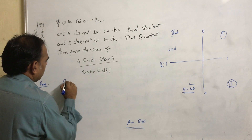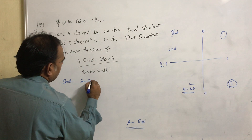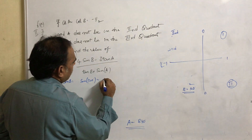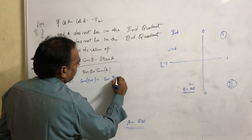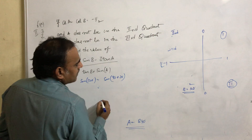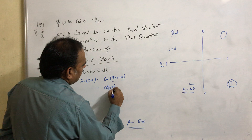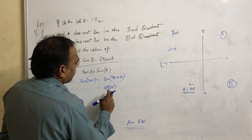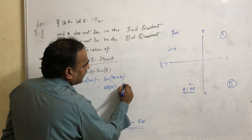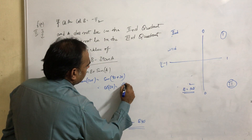Now, what is sin b? Sin b equals sin 120. We can write 120 as 90 plus 30. Sin(90 + 30) equals cos 30. Cos 30 equals root 3 by 2. So sin b equals root 3 by 2.